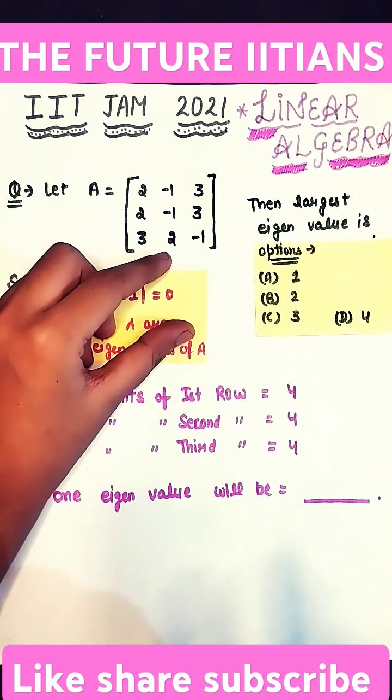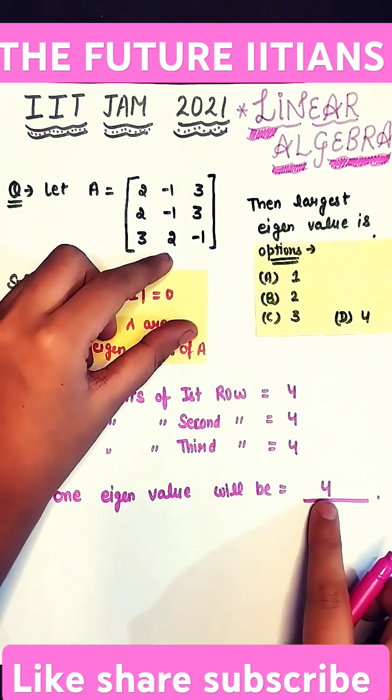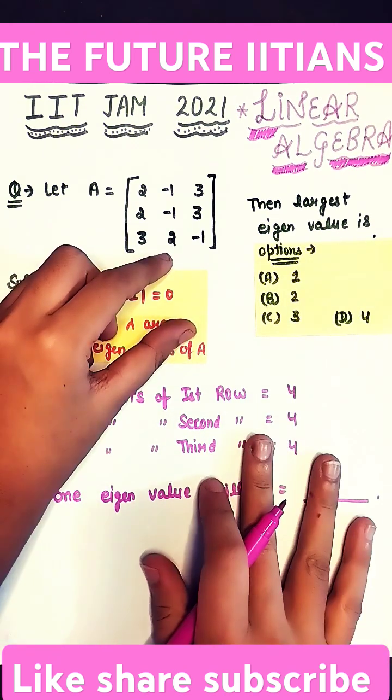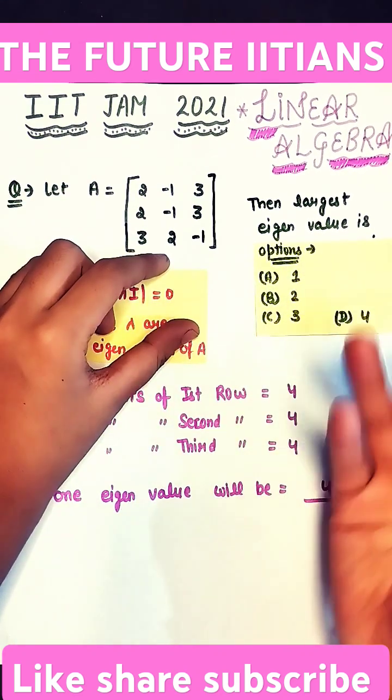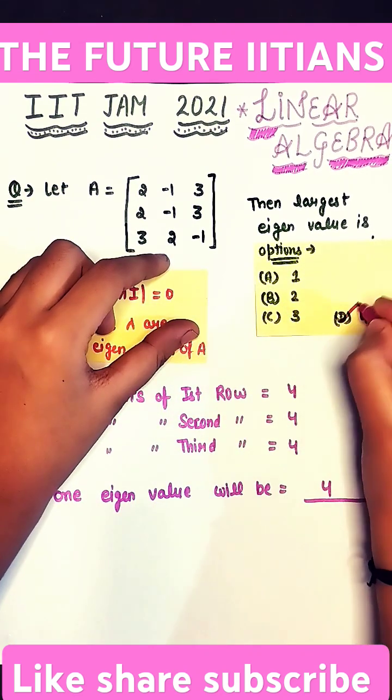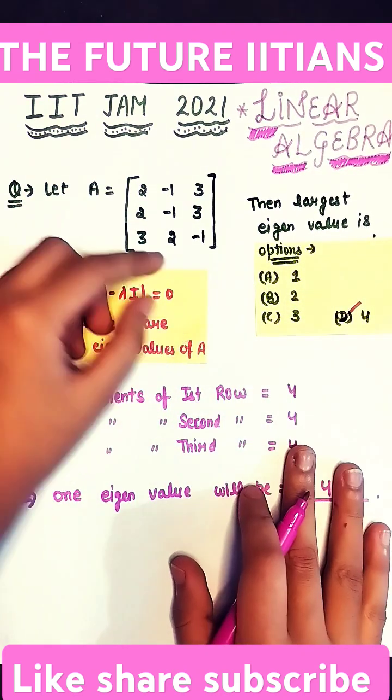If you get the same number, it means one eigenvalue will be equal to that particular number. And if we check the options, the highest number is 4, so the largest eigenvalue will be 4. Option D is correct.